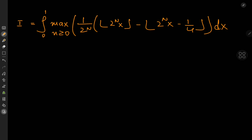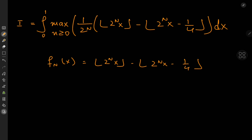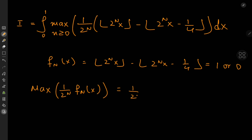Let's take apart this assortment of floor functions and define it as a function f_n(x). So we have floor(2^n · x) minus floor(2^n · x minus a quarter). Now because the difference between the arguments of the two floor functions is less than 1, the difference of the floor functions themselves is either going to be 1 or 0. So the maximum value of 1 by 2^n times f_n is 1 by 2^n.